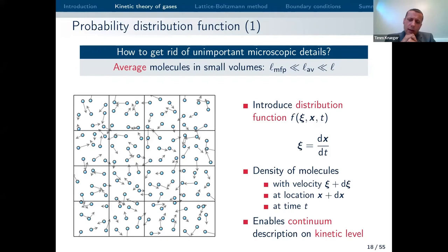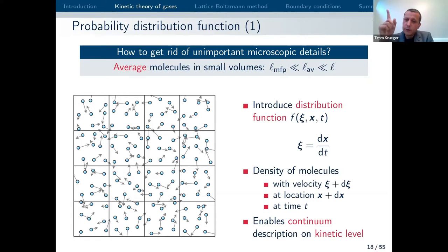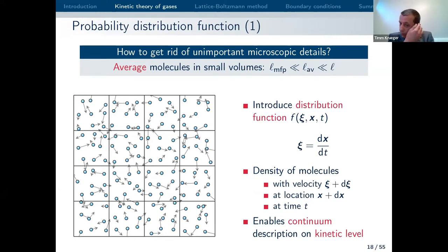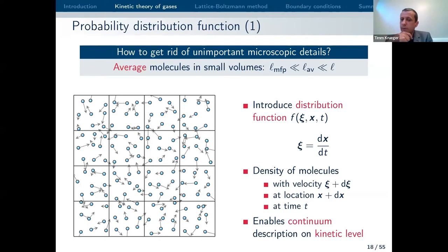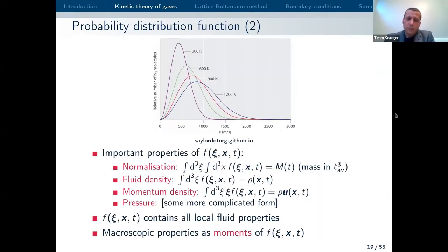The distribution function f is defined for every box at point x, with a time dependency. We ask: how many molecules do we have that are currently moving with velocity ξ? For example, 400 meters per second along the x-axis, or at a 45-degree angle between axes. ξ is a continuous coordinate in velocity space, telling us what velocity a molecule can have. We are counting how many molecules we have within a given range of velocities. This enables a continuum treatment while still retaining some kind of molecular information in the form of statistics.